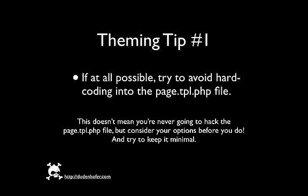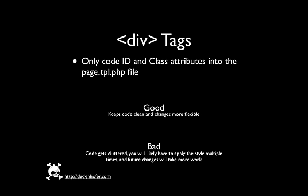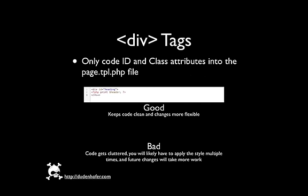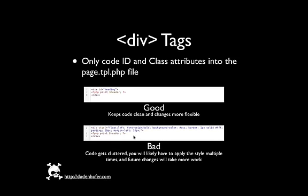The less coding that you put into the page template file means the more editable your pages will be. You can help keep your code clean by using IDs and class attributes in the div tags. You put these in the page.tpl file rather than the entire style within the div tag. An example of a good div tag that uses this is this one right here, where it says: div ID equals heading, print header, close div. If you didn't use the ID, your code may look like this instead.